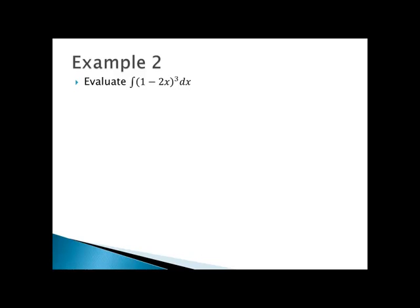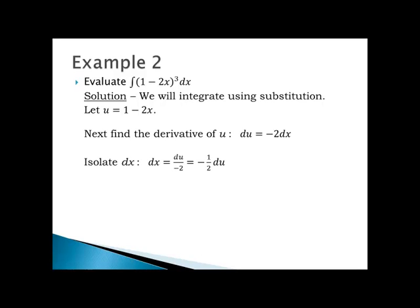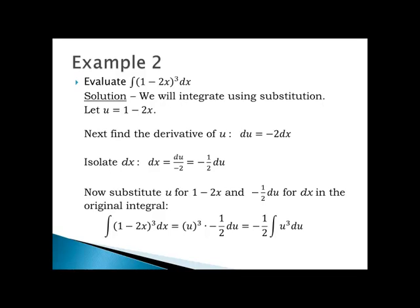Example 2: Evaluate the integral of the quantity 1 minus 2x to the third power with respect to x. The integrand is composite — the outside function is the cubing function and the inside function is 1 minus 2x — so I'll let u equal 1 minus 2x. The derivative of u gives du equal to negative 2 dx. Isolating dx, I get dx equals du divided by negative 2, or negative one-half times du. Now I'll substitute u for 1 minus 2x and negative one-half du for dx.